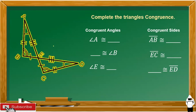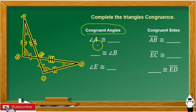Now we are going to complete the triangle congruence based from triangles ABE and DCE. Angle A is congruent to angle D. Angle B is congruent to angle C.